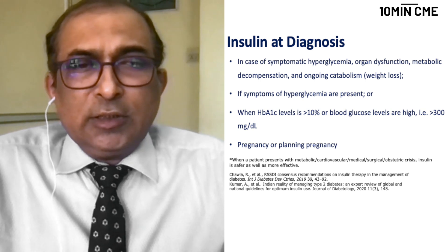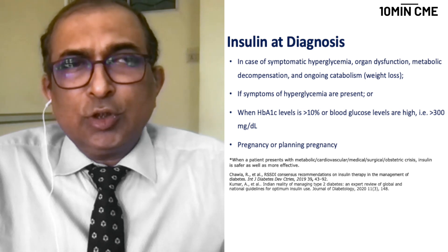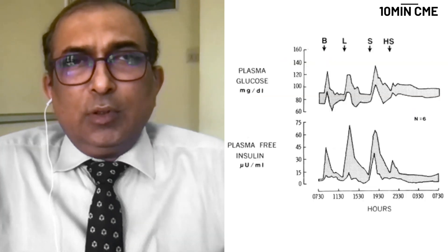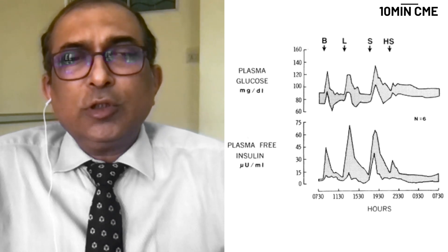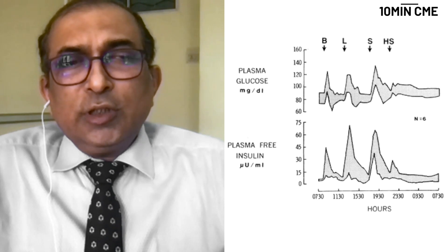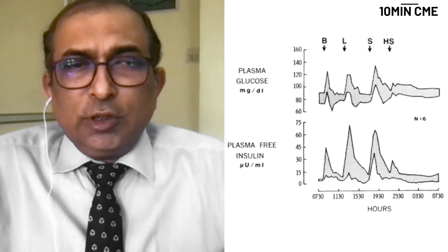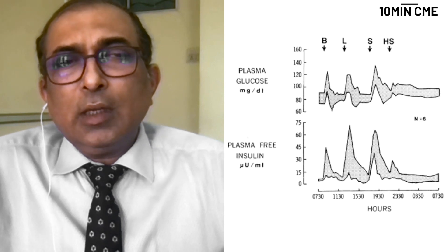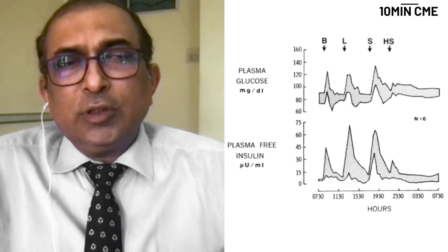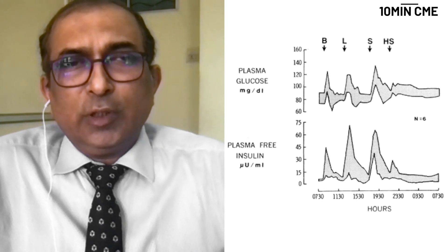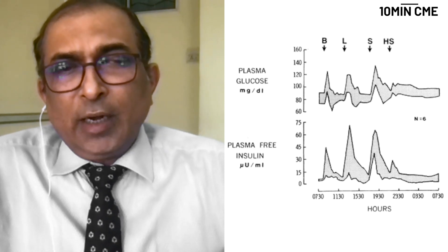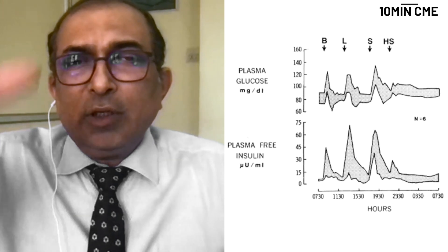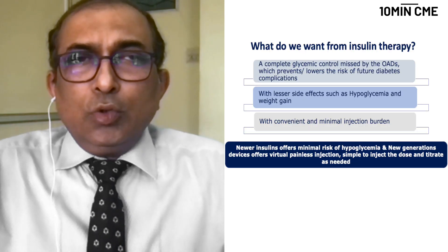Those who develop diabetes during pregnancy — gestational diabetes — are also situations where insulin may be required even before three oral agents have been used. When giving insulin, we aim to mimic physiological insulin secretion. In a normal individual, there is a continuous basal insulin secretion throughout the day, with additional prandial insulin release at breakfast, lunch, and dinner, after which levels return to basal. This is what we try to imitate when giving insulin exogenously.